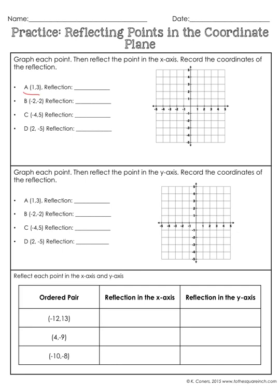First let's plot that. We go 1 to the right and then up 3, and we plot that right here — that's point A. Now if we want to reflect over the x-axis, that means we have to go over the x-axis. When we reflect, the points need to be symmetrical. So if this is 3 points away from the x-axis, we have to go 3 points away from the x-axis on the other side.